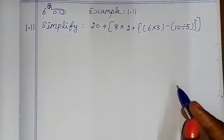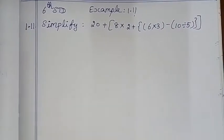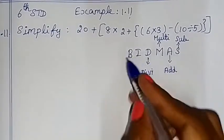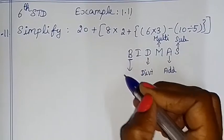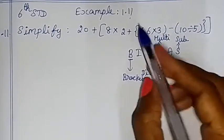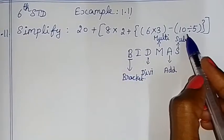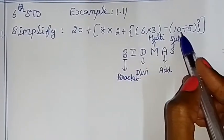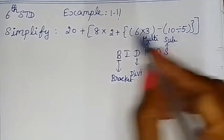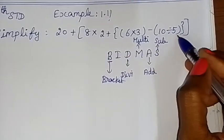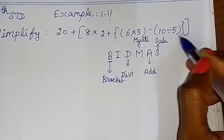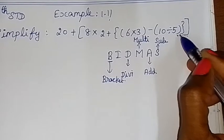We follow the BIDMAS rule. There is a bracket — that is first. In the same brackets, there are three brackets. We solve the innermost one first. Round bracket, square bracket — the inner bracket is solved first.